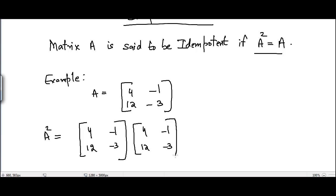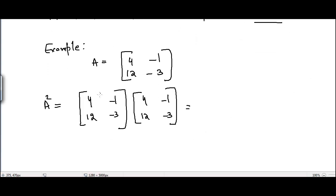Now to multiply any two matrices, we follow this procedure. First row, first column: 4 times 4 is 16, and -1 times 12 is -12. I assume that you know matrix multiplication. And then first row, second column: the element will become -4, since -1 times 4 is -4 here, and -1 times -3 is +3 here.